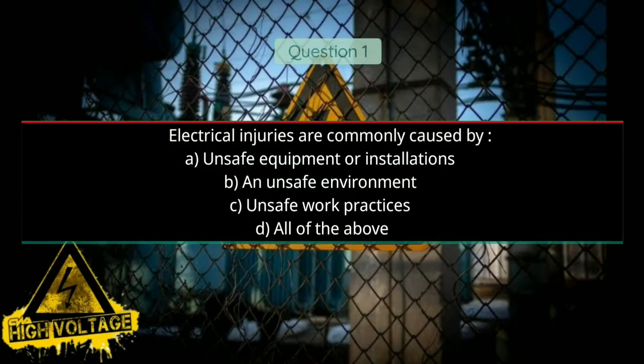Question number one: Electrical injuries are commonly caused by — Option A: unsafe equipment or installations, Option B: an unsafe environment, Option C: unsafe work practices, and Option D: all of the above. Correct answer will be D, all of the above.